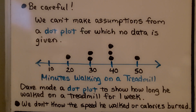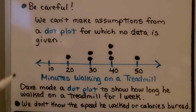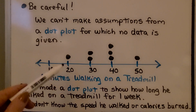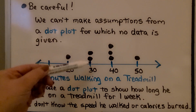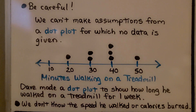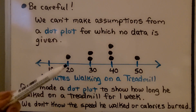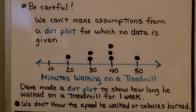But we need to be careful. We can't make assumptions from a dot plot for which no data is given. If this is a dot plot of minutes walking on a treadmill, we could say Dave made a dot plot to show how long he walked on a treadmill for one week. We don't know the speed he walked or the calories he burned — we just know the minutes. For one week we have seven data values: one day he did 20 minutes, 30 minutes on two different days, 40 minutes on three different days, and one day he did 50 minutes. He may have burned more calories walking at level three for 30 minutes than level one for 40 minutes. So we don't know how quickly he walked, the level he put the treadmill on, the calories he burned, the distance — we only know the minutes.